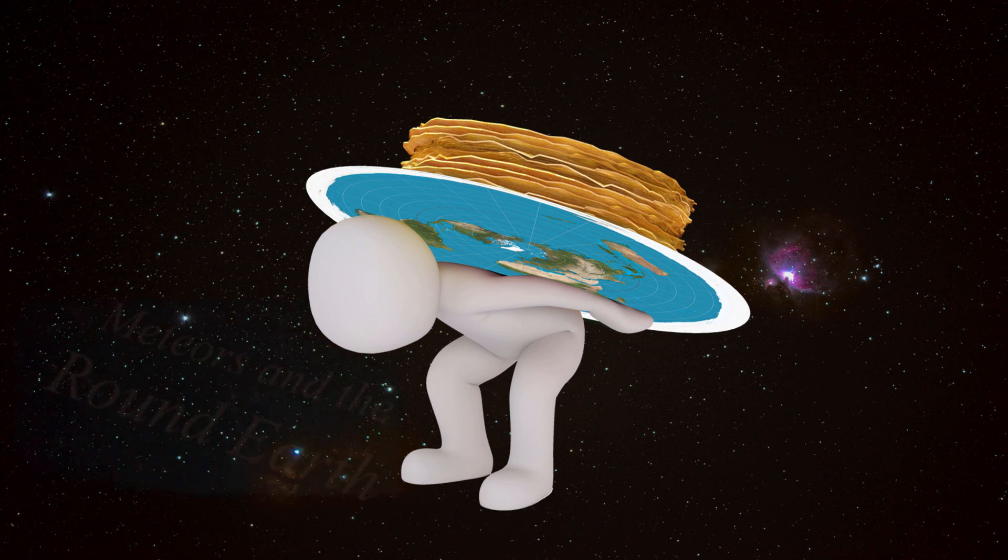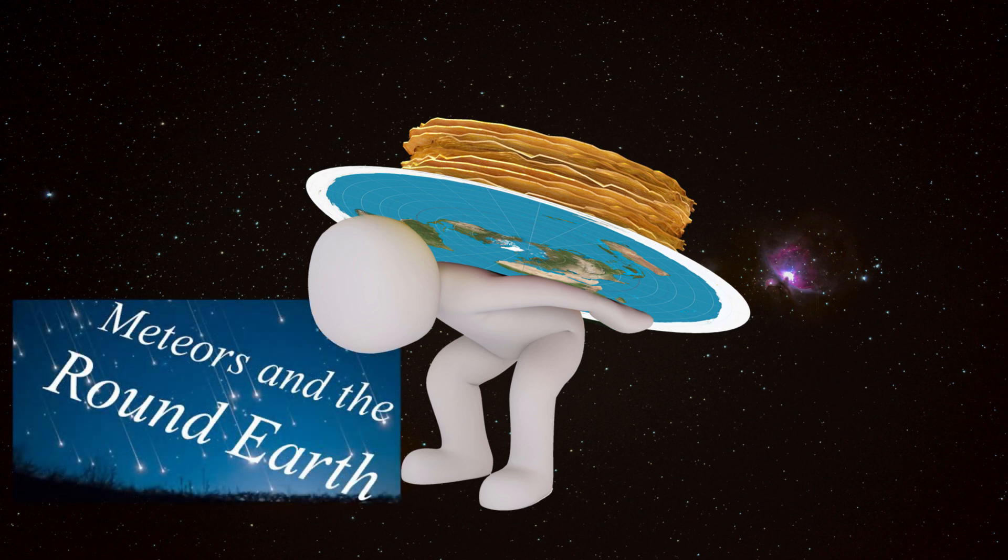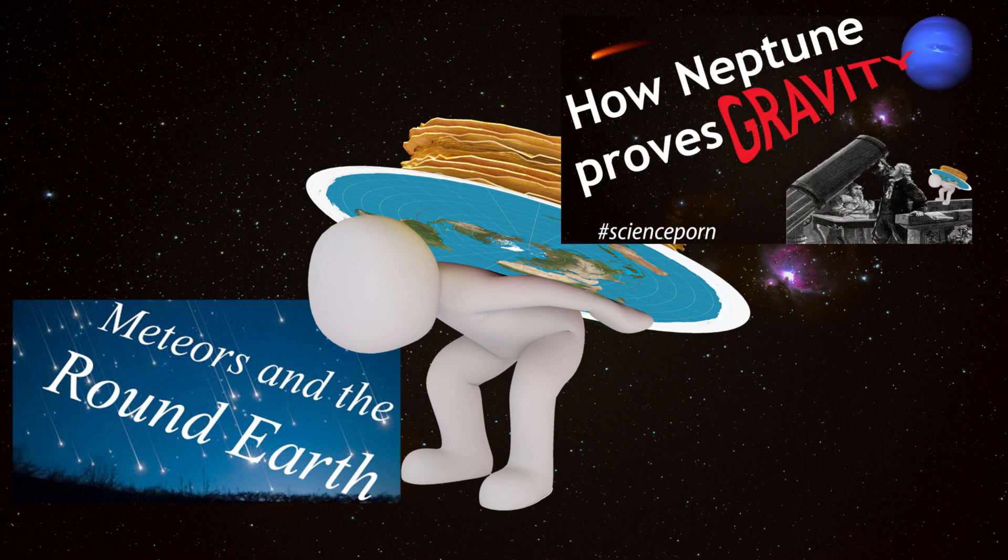First, we're going to take a look at meteor showers and how they pretty much confirm the shape of the Earth. And then we'll look at the odd orbit of the planet Uranus and how it confirms the curvature of spacetime and gravity. I hope you enjoy.